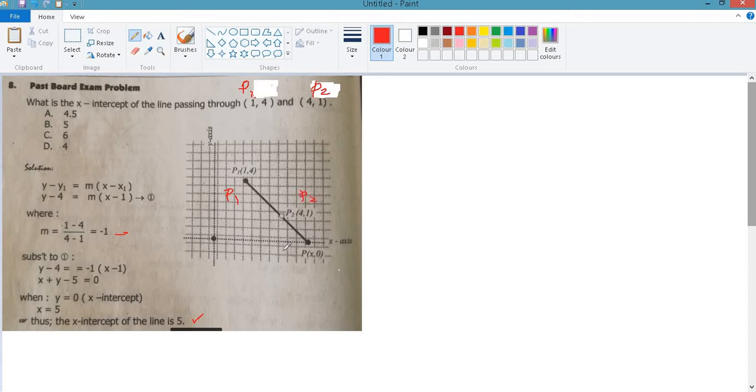The x-intercept will be, the definition of x-intercept is the point which passes through the x-axis, so the coordinate will be x,0. The y-intercept is the point where it touches the y-axis, so this is 0,y. That is the definition of x-intercept and y-intercept.